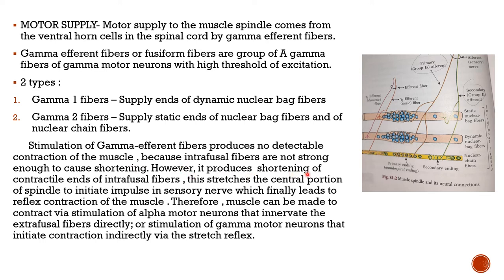However, stimulation of gamma efferent fibers produces shortening of the contractile ends of intrafusial muscle fibers. This stretches the central portion of the spindle, initiating impulses in the primary sensory nerve, which leads finally to reflex contraction of the muscle. Therefore, the muscle can be made to contract via stimulation of alpha motor neurons innervating extrafusial muscle fibers directly, or via stimulation of gamma motor neurons that initiate contraction indirectly through the stretch reflex.